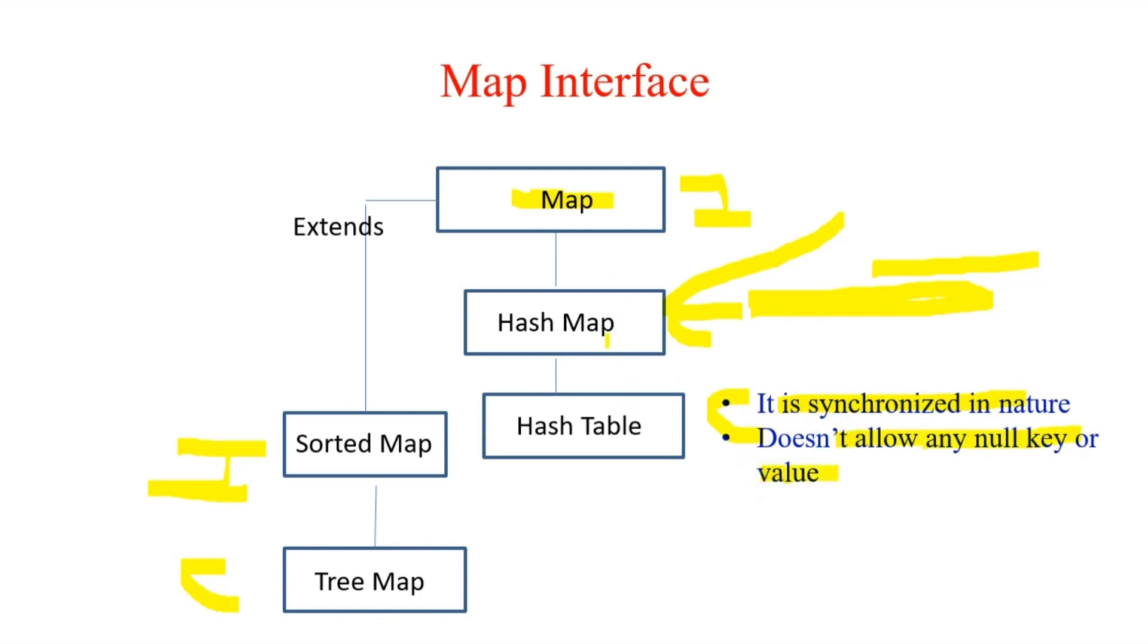So this is a very important difference between HashMap and HashTable. It will for sure be asked in an interview—what is the difference? Then you have to tell that the main differences are: this is not synchronized, this is synchronized, and it does allow one null key and multiple null values, but it does not allow neither null keys nor null values.